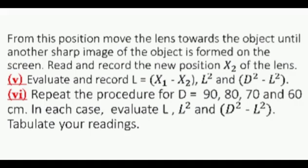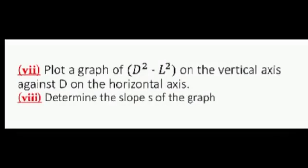Repeat the procedure for D equals 90, 80, 70, and 60 cm. In each case, evaluate L square and D square minus L square. Tabulate your readings. Plot a graph of D square minus L square on the vertical axis against D on the horizontal axis. Determine the slope of the graph.